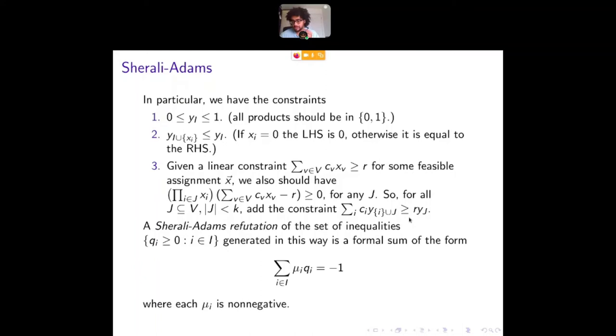So Shirali-Adams refutation then is we have these, we have all of these constraints at our disposal and we take a non-negative combination of them and make it formally sum to minus one. If we can do this, then we've shown that for sure that the original program wasn't satisfiable. Because if it was satisfiable, you could plug into these Y variables, the values of like actual products from some solution. And this left-hand side will be non-negative. It certainly is, it's never going to be minus one. This means this is a sound proof system.